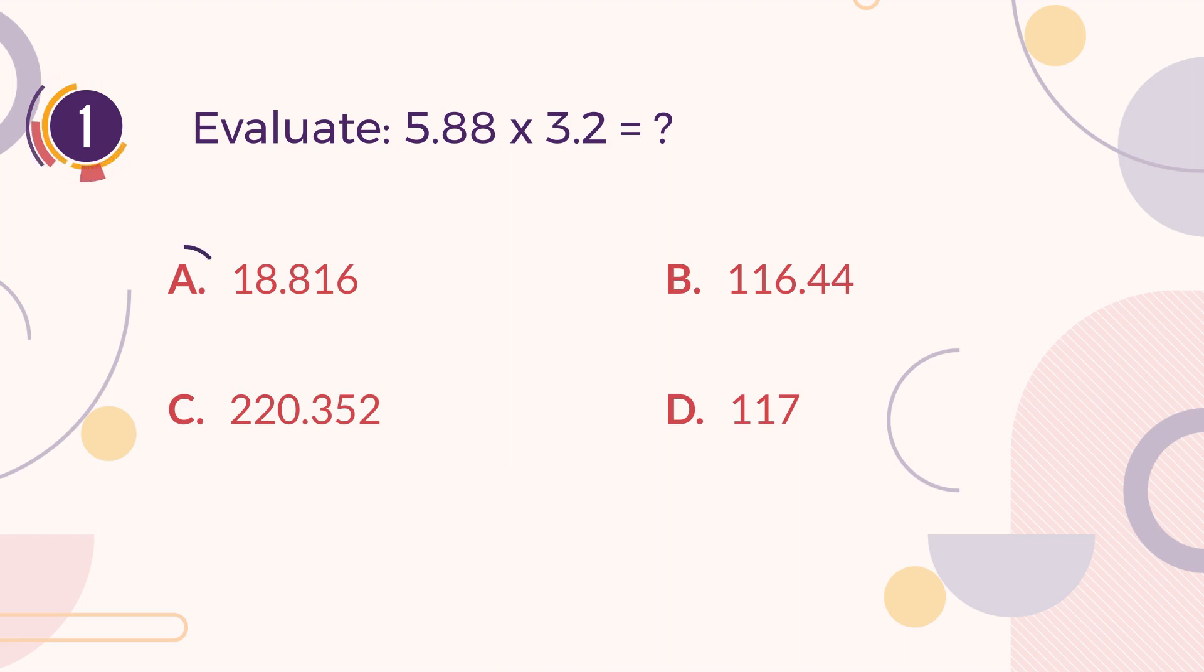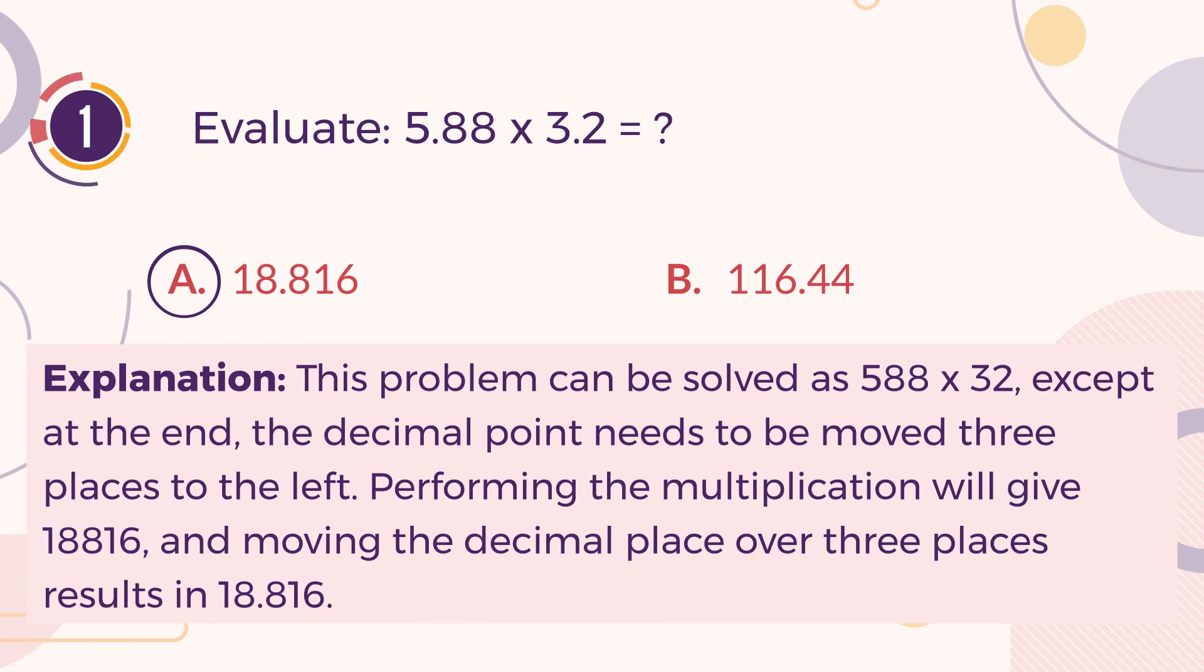The correct answer is A. 18.816. Explanation. This problem can be solved as 588 multiplied by 32, except at the end, the decimal point needs to be moved three places to the left. Performing the multiplication will give 18,816, and moving the decimal place over three places results in 18.816.